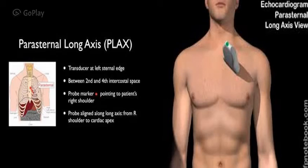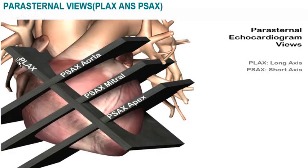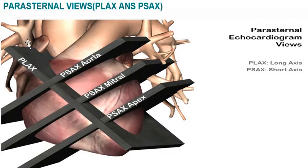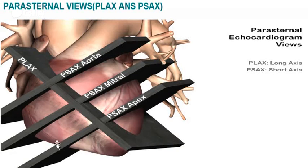In the parasternal long axis view, the ultrasound beam passes mainly through the left ventricle and through parts of the great vessels and the right ventricle. Perpendicular to this long axis, we obtain the short axis view, which will be discussed later.